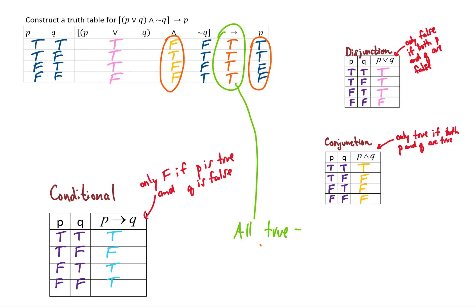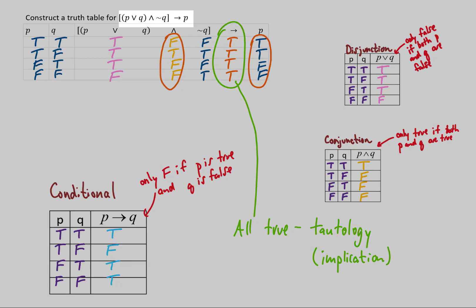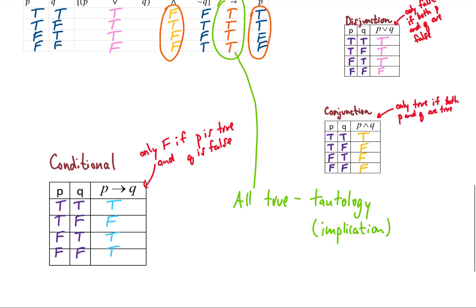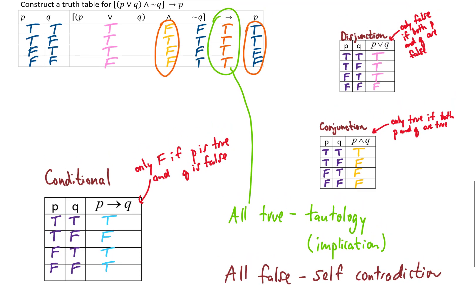Anytime we get all true as our answer column in a truth table, we call that a tautology. If this tautology happens to be a conditional, we call it an implication — meaning no matter what, the original statement is always going to be true. For one last piece of vocabulary: if we get all false in our answer column, we call that a self-contradiction, meaning the statement is never going to be true.